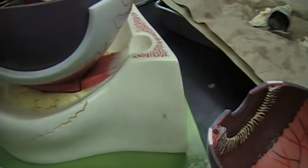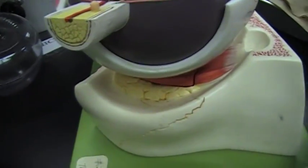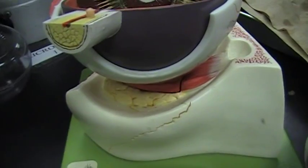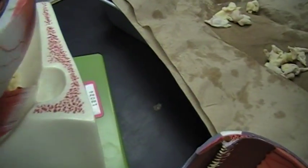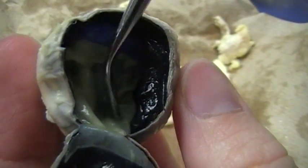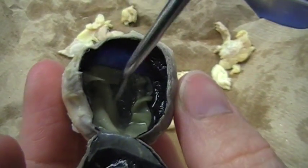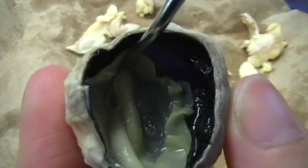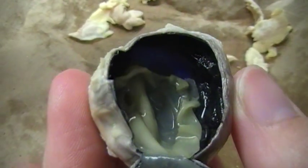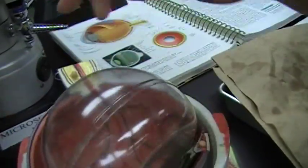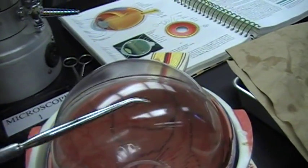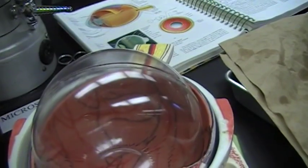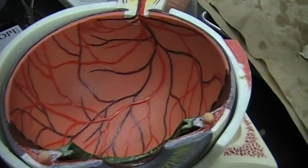Next is the vitreous humor. It is a jelly-like substance and it helps to hold the lens in place anteriorly and helps to hold the retina against the choroid coat. It would fill the whole area of the eye here and hold the retina against the back of the eye. But this one has been popped, so you can't really see it, but it would be all that shimmery looking stuff in there, the jelly-like substance. And on the model, it is all of this, this whole thing right there.